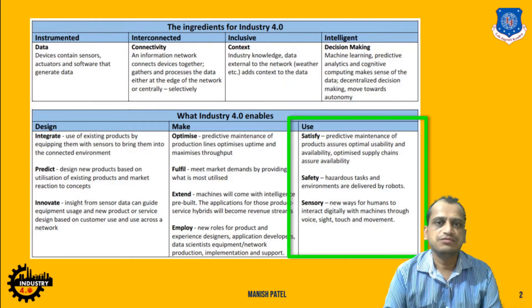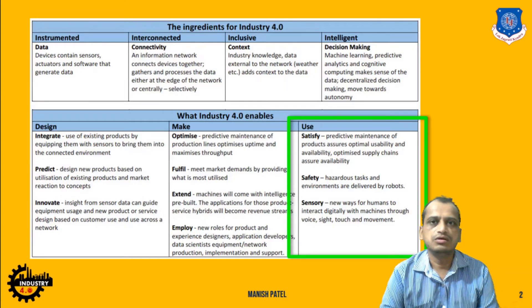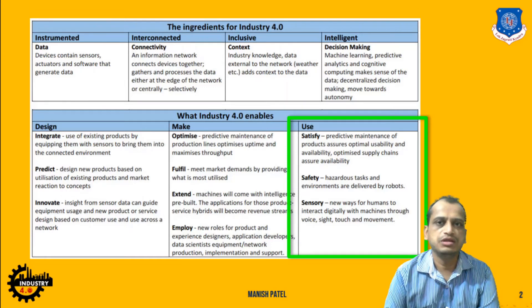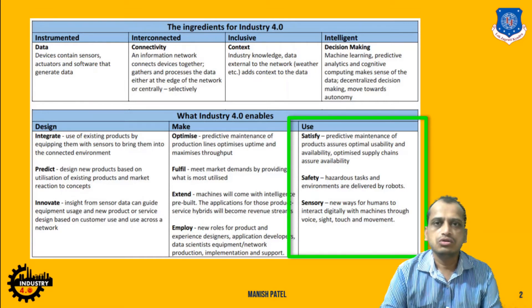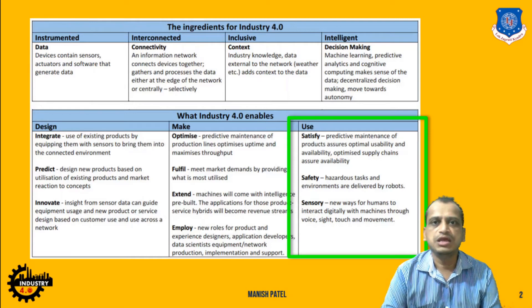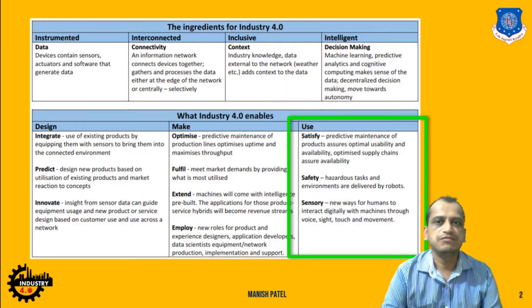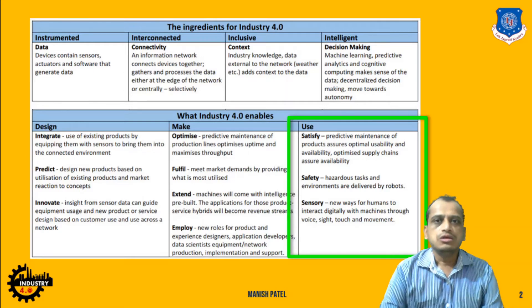Then we have 'Movement.' For example, if you want to move raw material from one place to another, you use cranes or robots — specifically AGVs, Automated Guided Vehicles. These are some of the key ingredients and enablers of Industry 4.0.